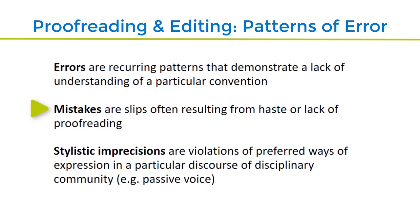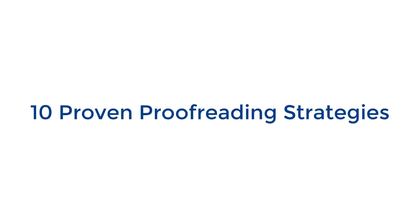Lastly, you should also be aware of stylistic errors. These may not be incorrect in terms of grammar, but are things that go against the stylistic conventions of a particular discipline or form of writing. The next two slides give 10 proofreading strategies that can help you spot all three of these kinds of errors or mistakes.